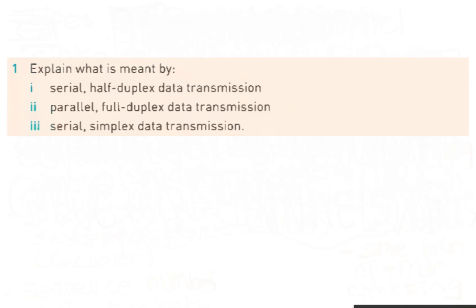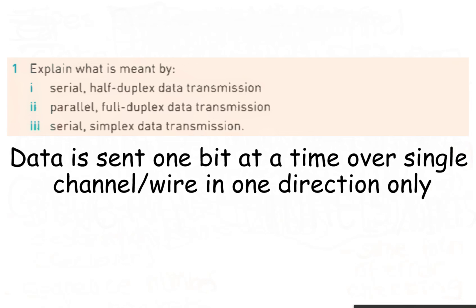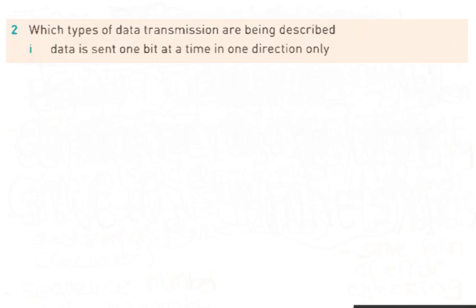Explain what is meant by serial simplex data transmission. The correct answer is: data is sent one bit at a time over a single wire in one direction only, from sender to receiver.